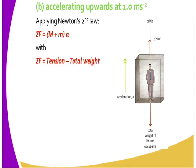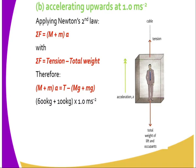So when the lift is accelerating upwards, we apply Newton's second law of motion: F = ma. Therefore the tension in the cable is given by T minus the combined weight.